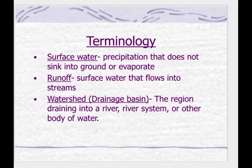The next topic is surface water, runoff, and watersheds — pretty much streams and rivers. Here's some terminology you should know: surface water is precipitation that does not sink into the ground or evaporate. Runoff is that water that flows into streams. A watershed is a drainage basin — a region of drainage going into a river and then into a river system or other body of water. Living in Alabama, we are in the Tennessee watershed, so all those rivers and streams go into one basin of water.